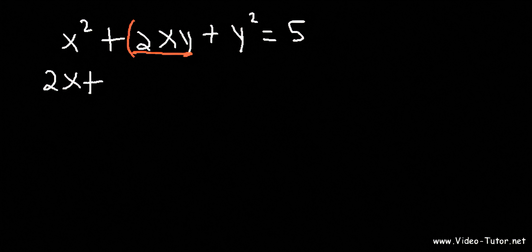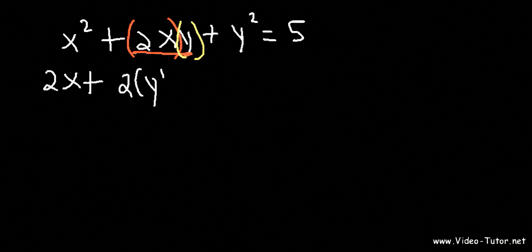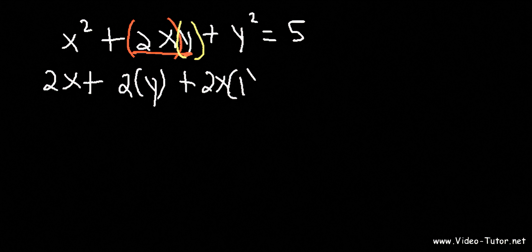So let's separate 2xy into two parts: 2x and y. To use the product rule, you differentiate one part and keep the other part the same. We're going to differentiate the 2x part, which becomes 2, and keep y the same. Plus, keep the first part the same and differentiate the second part. The derivative of y is 1, and any time you differentiate a y variable in implicit differentiation, add dy/dx to it.